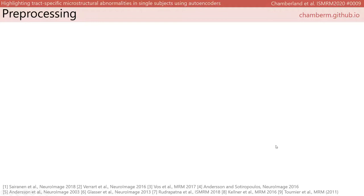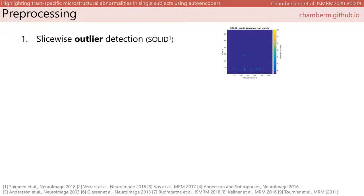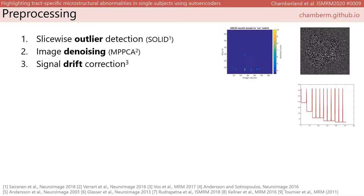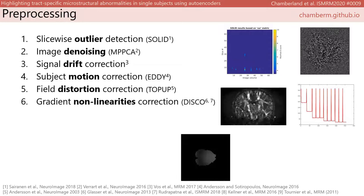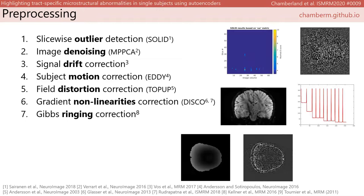For this unique KIDS dataset, we invested a lot of time to provide a comprehensive pre-processing pipeline to remove or reduce artifacts. This included slicewise outlier detection, image denoising, signal drift correction, subject motion and distortion correction combined with gradient non-linearity correction specific to the Connectome, the removal of Gibbs ringing artifacts, and finally the generation of physically implausible signal maps.